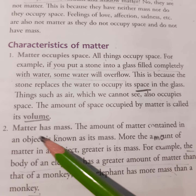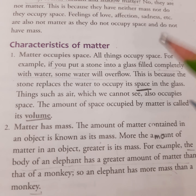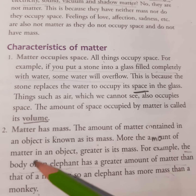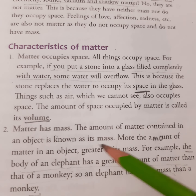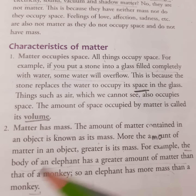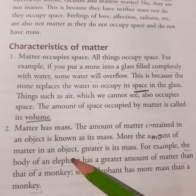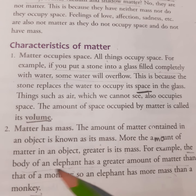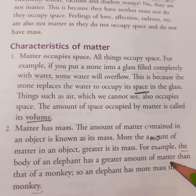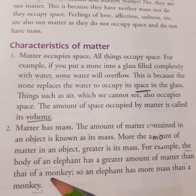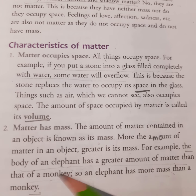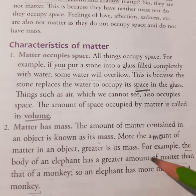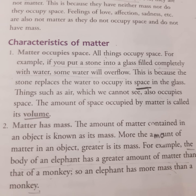Next is matter has mass. The amount of matter contained in an object is known as its mass. More the amount of matter in an object, greater is the mass. For example, the body of an elephant has a greater amount of matter than that of a monkey because the elephant is bigger. So an elephant has more mass than a monkey.